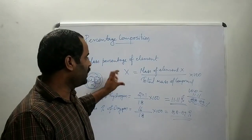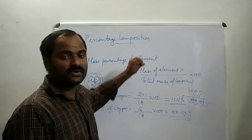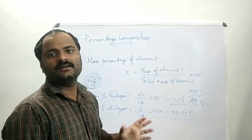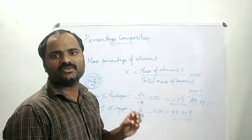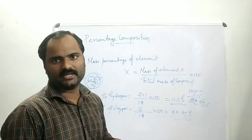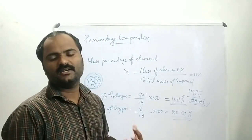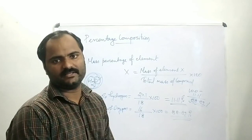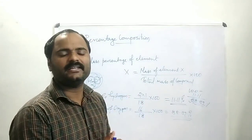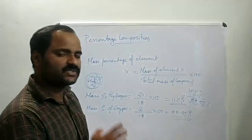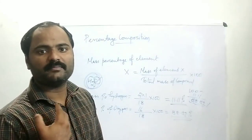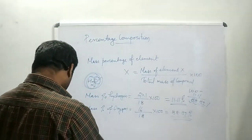So mass percentage of an element is the mass of that element present in the total mass of a compound. This is known as mass percentage, or the percentage composition of a particular element in a compound.